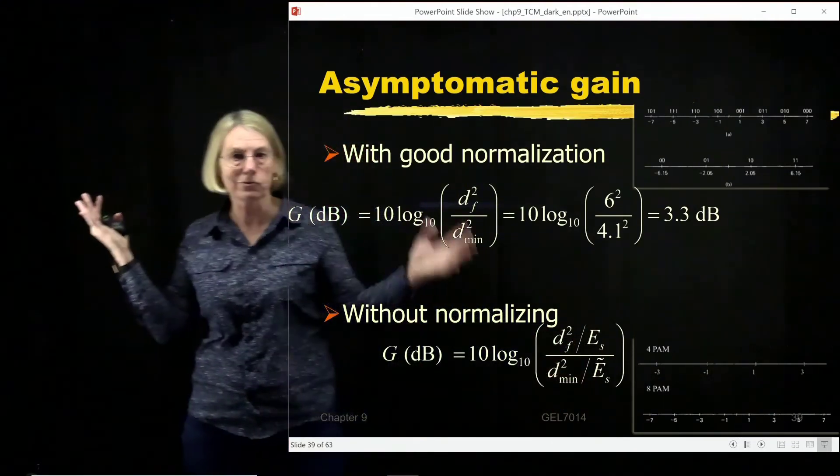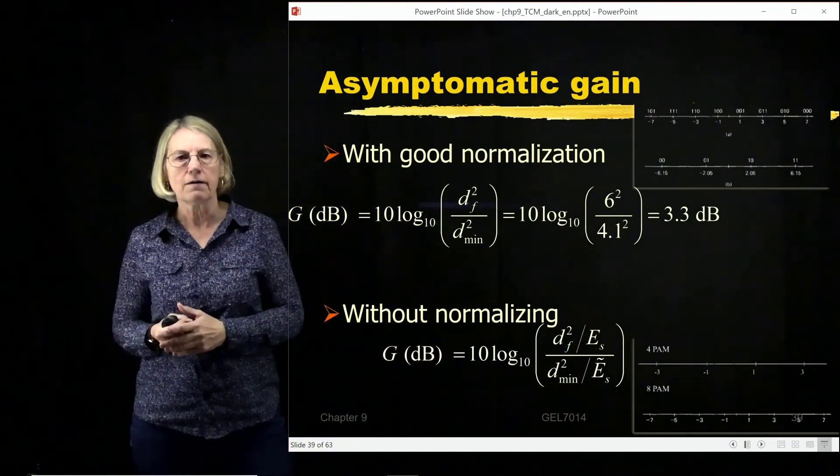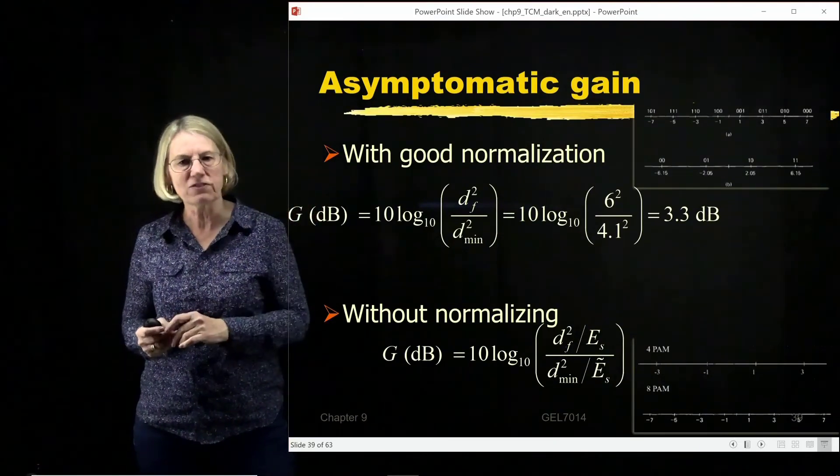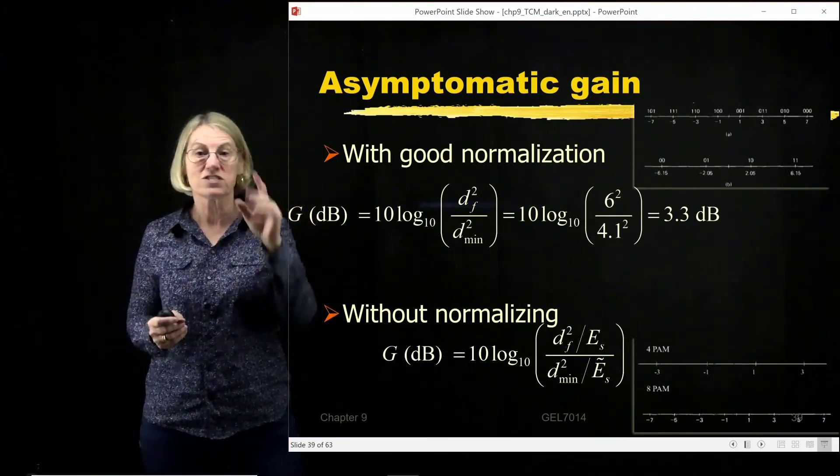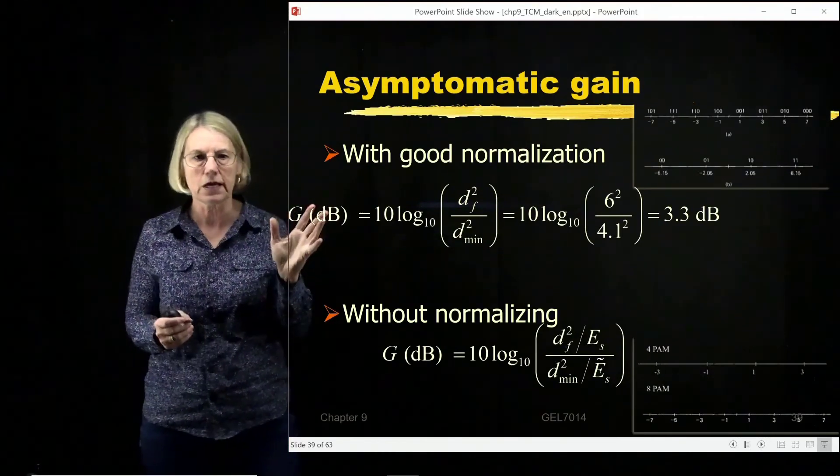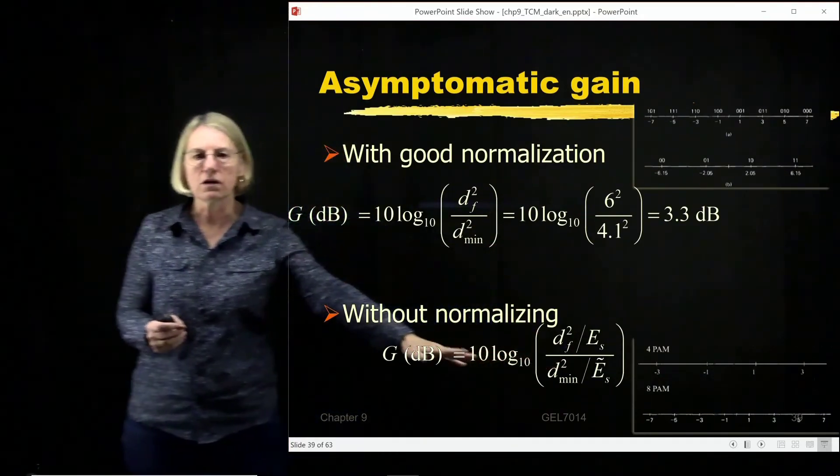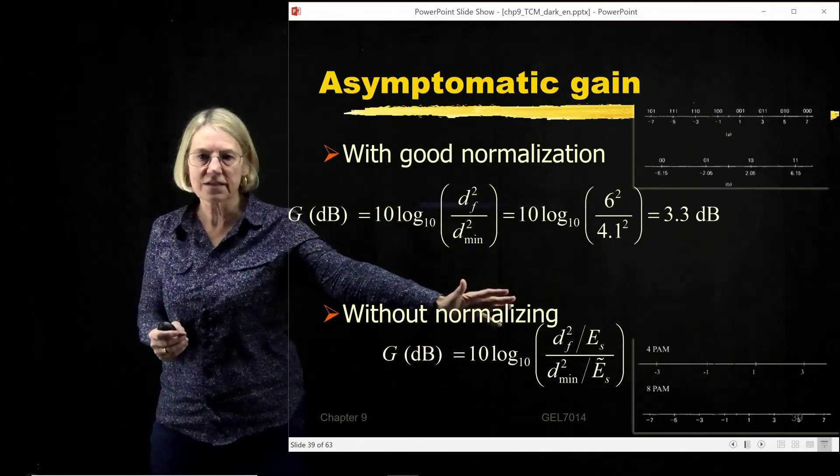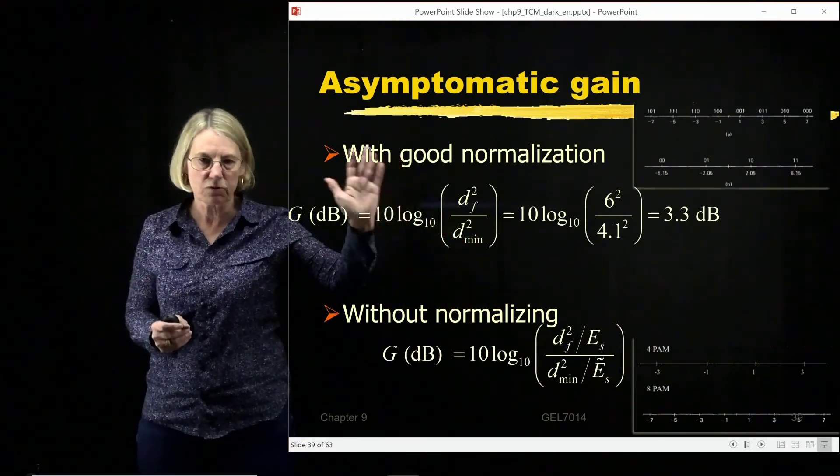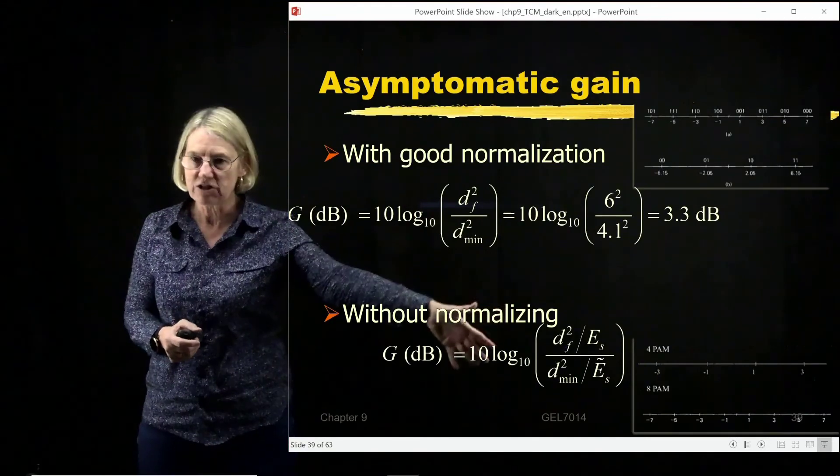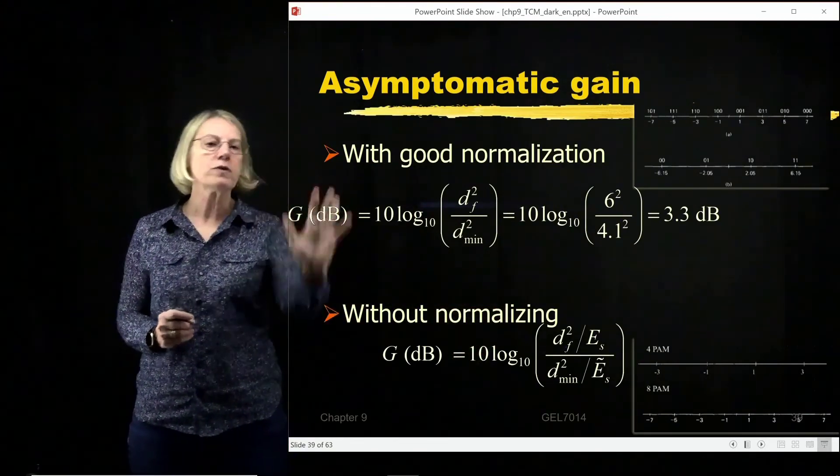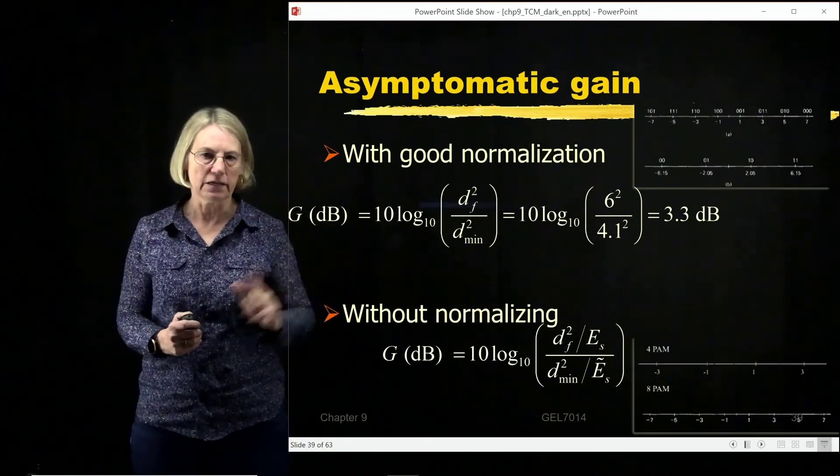So I sort of went through a shortcut here so that we could have nice round numbers, 7 minus 5, 7 minus 3. Things are easier to calculate. But, of course, if you always go to signal space with the parameterization with the average energy per symbol, you'll always have the good normalization. Here we had to be a little careful.